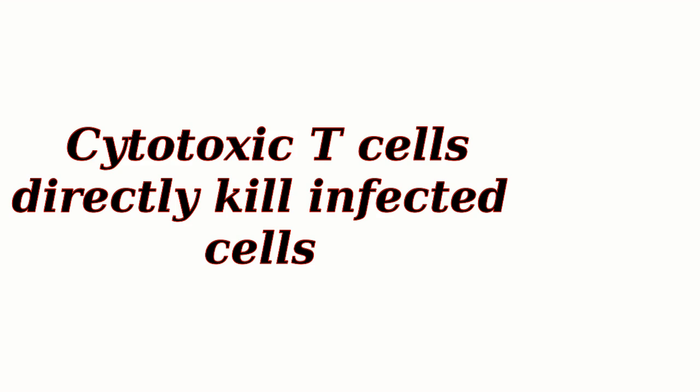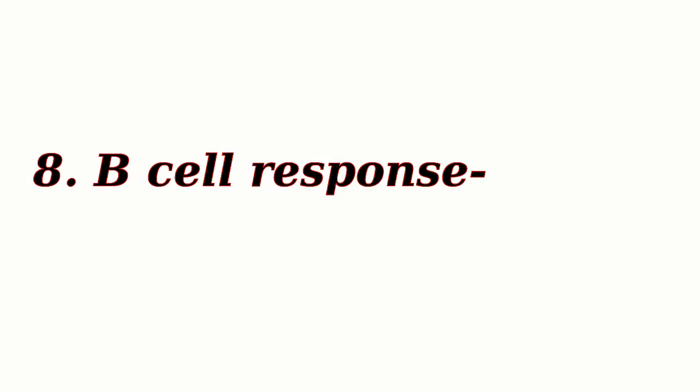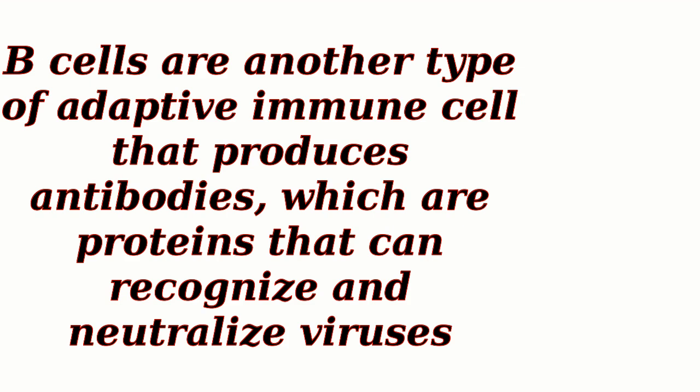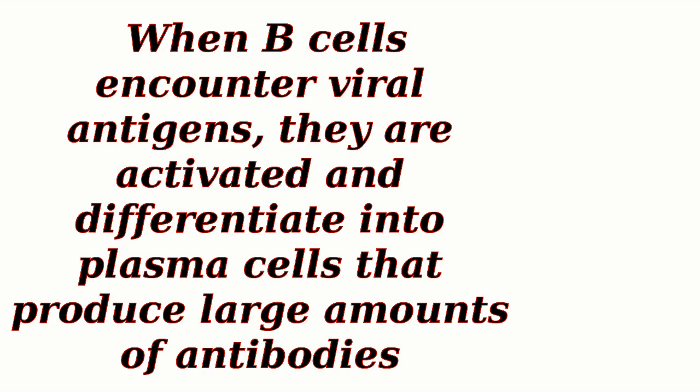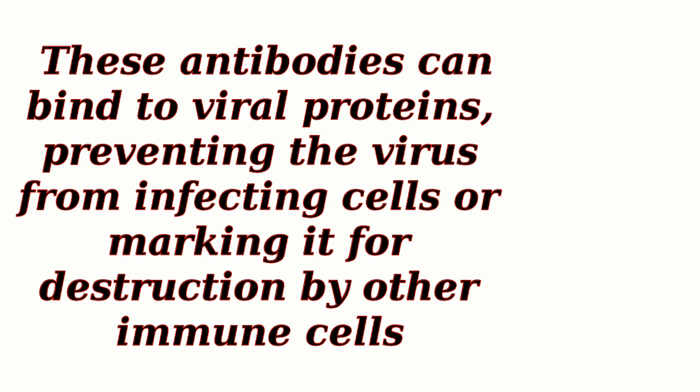Cytotoxic T-cells are another type of adaptive immune cell. B-cells produce antibodies, which are proteins that can recognize and neutralize viruses. When B-cells encounter viral antigens, they are activated and differentiate into plasma cells that produce large amounts of antibodies. These antibodies can bind to viral proteins, preventing the virus from infecting cells or marking it for destruction by other immune cells.